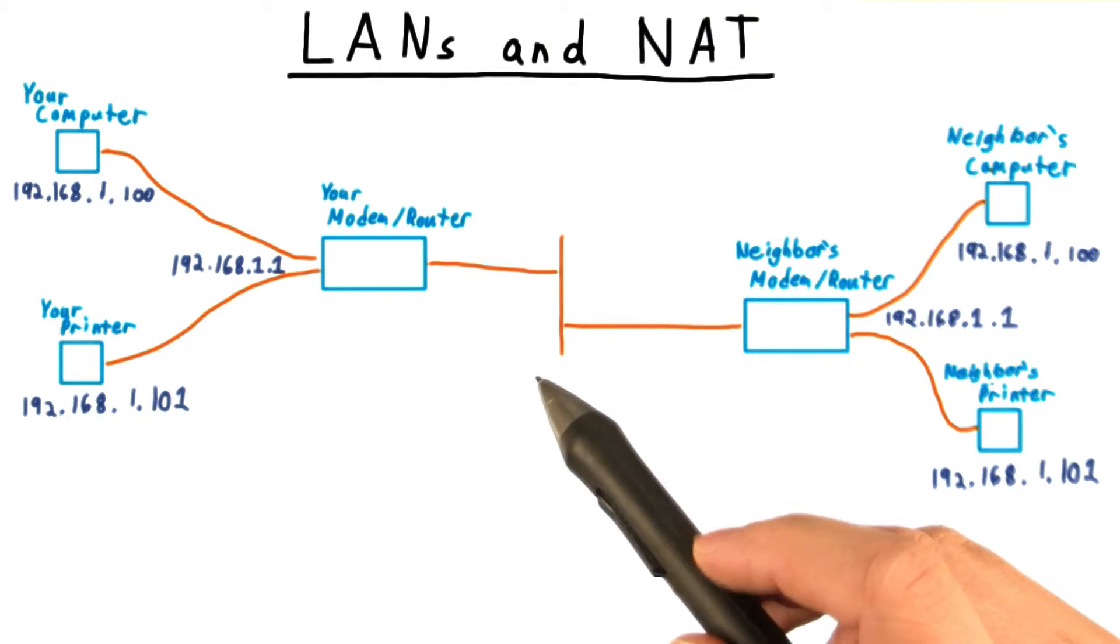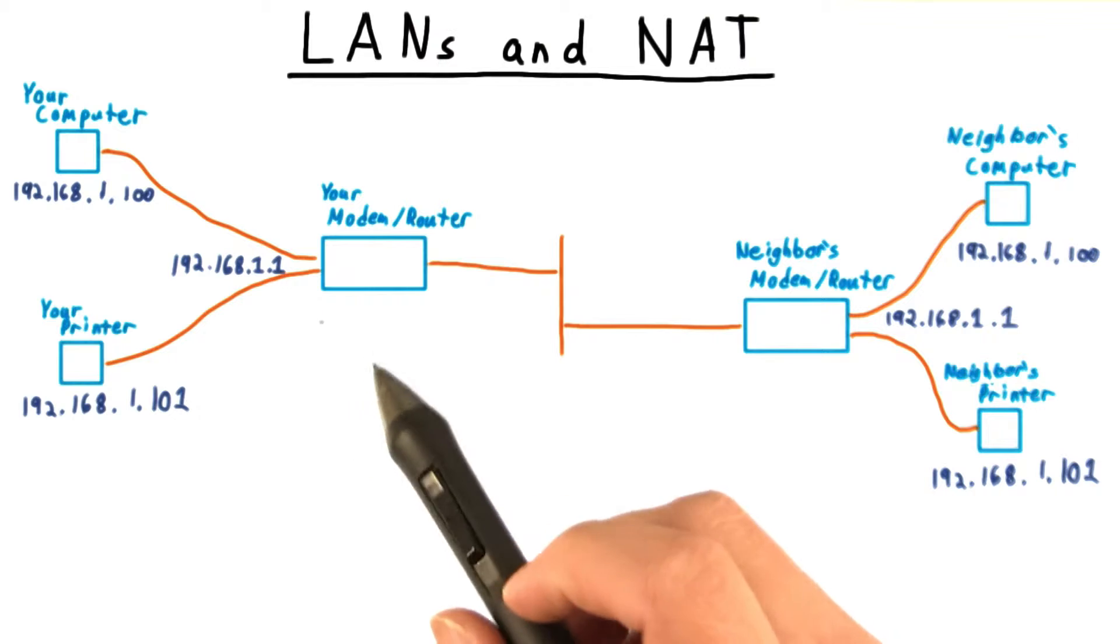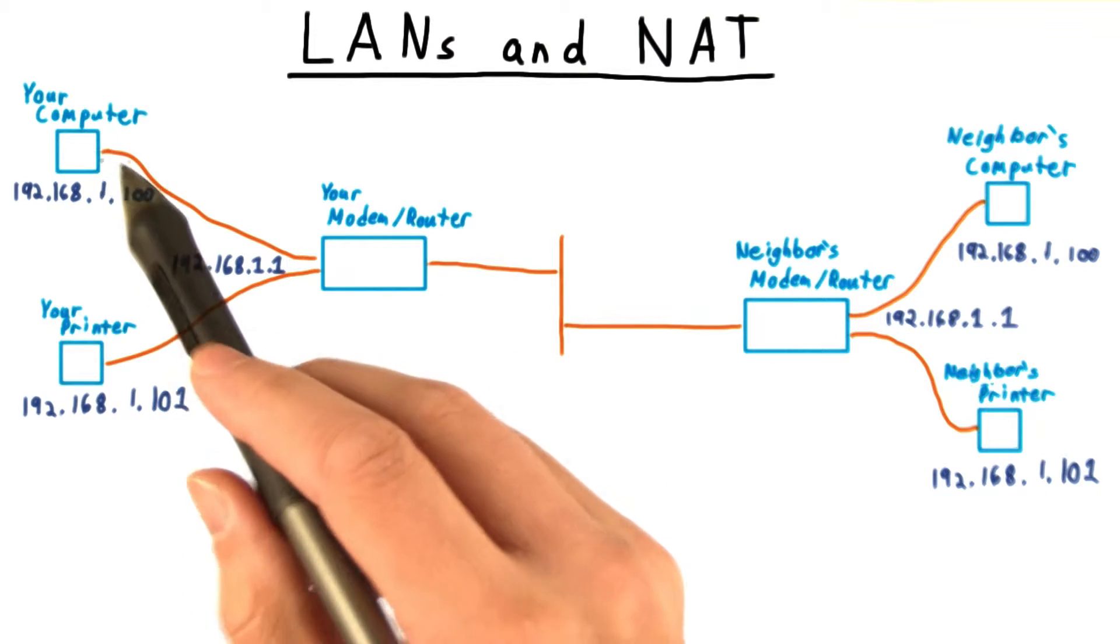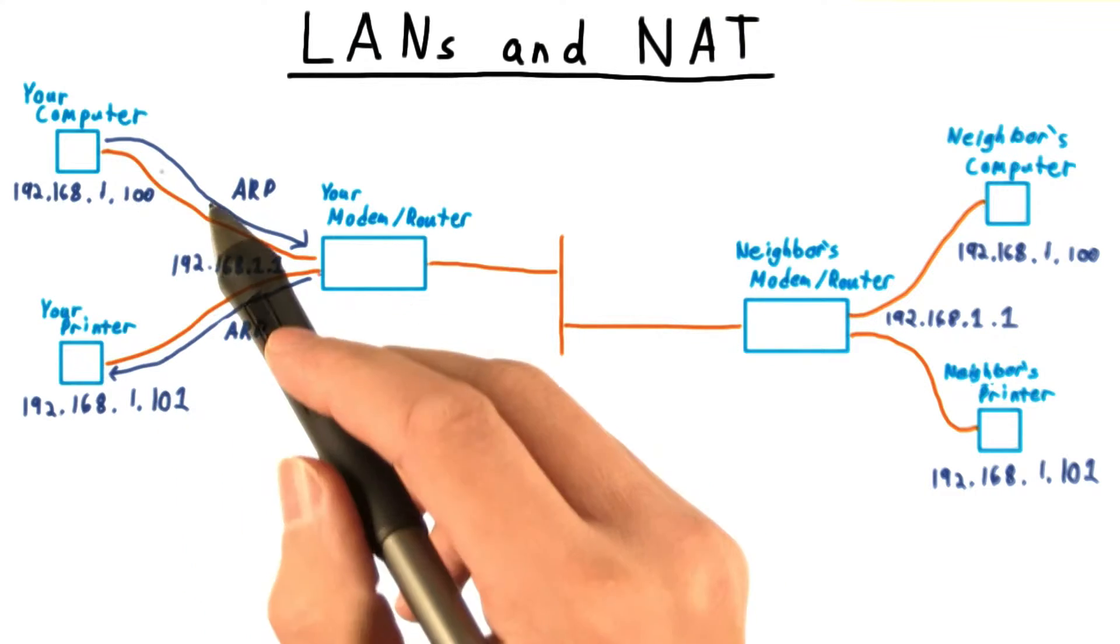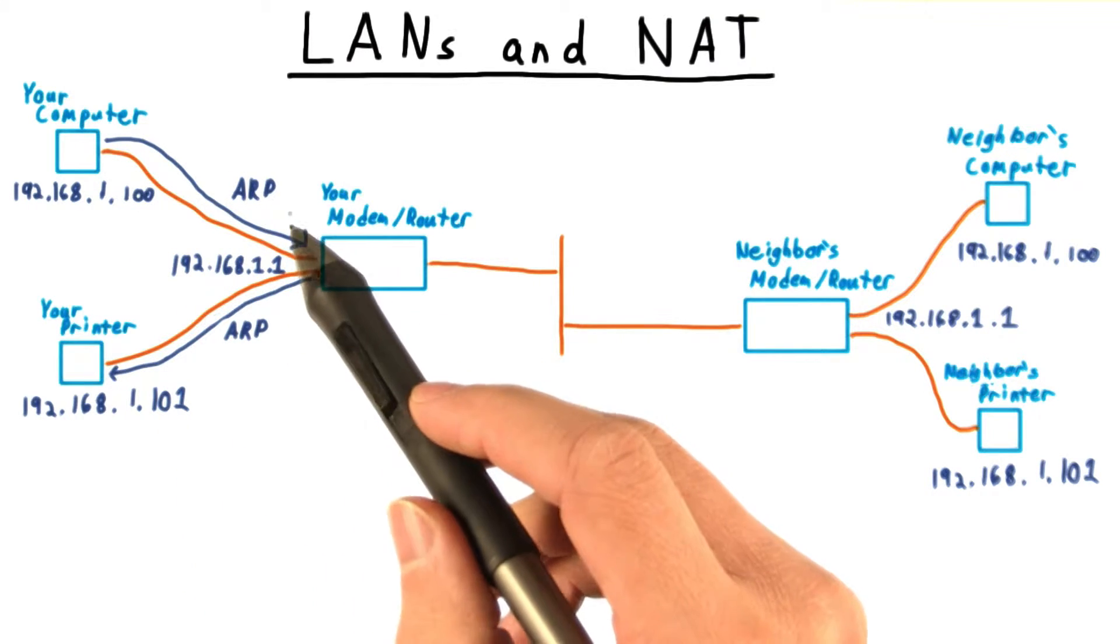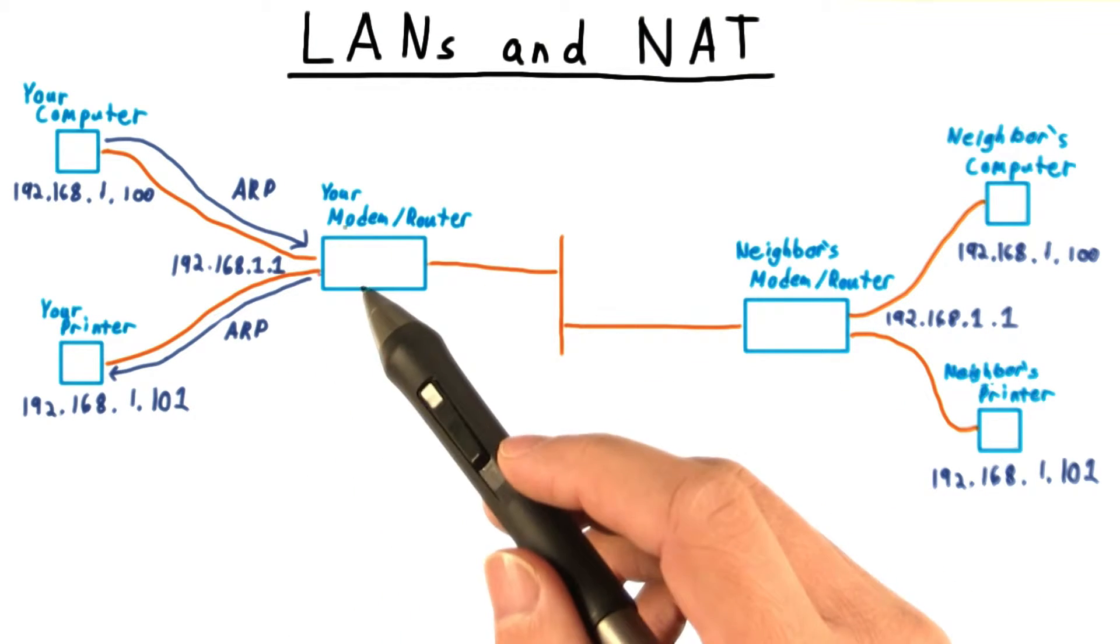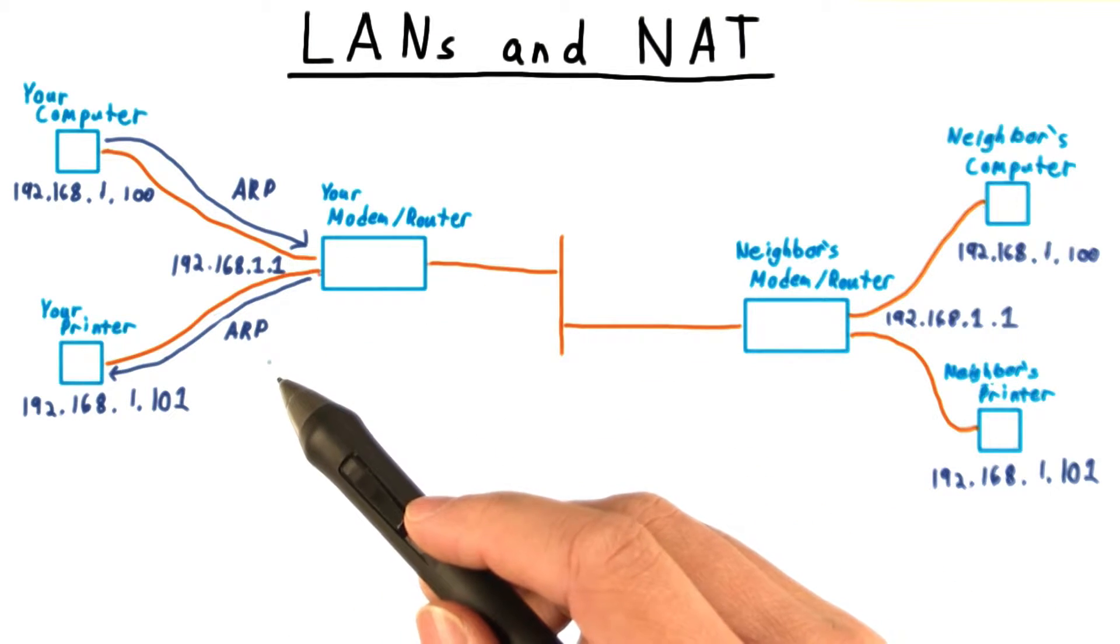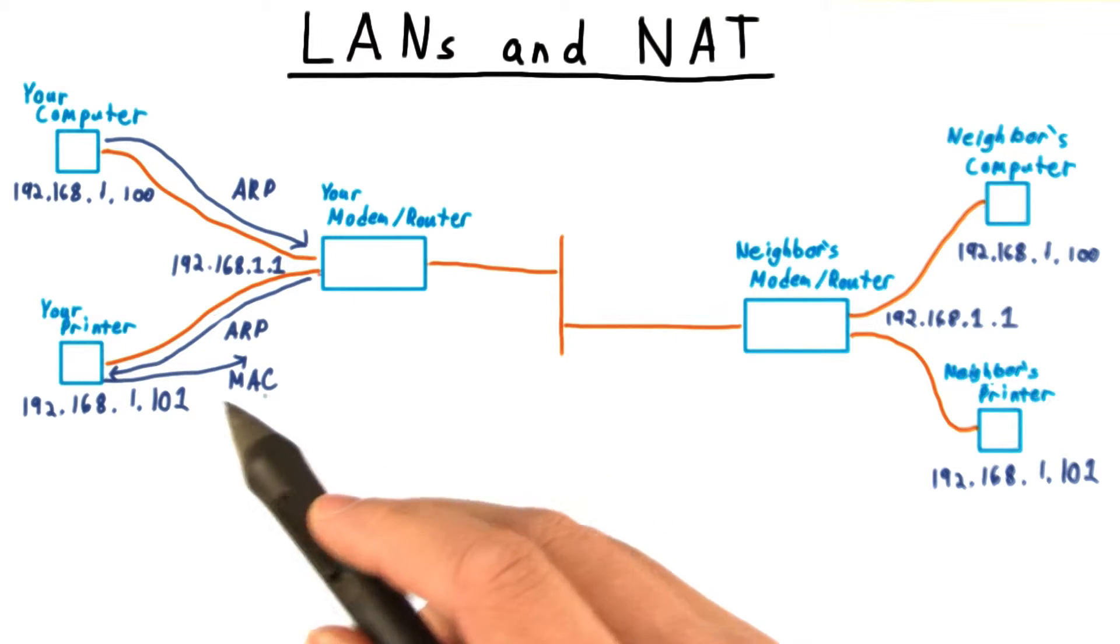Remember that the network layer is dependent on the link layer, and everything ultimately gets sent through the link layer protocol. So let's say that your computer knows the IP address of the printer, but not its MAC address. To find it, the computer broadcasts an address resolution protocol, or ARP packet, to the whole link network, asking who has the IP address 192.168.1.101. The printer will respond with its MAC address, and then we're good to go.